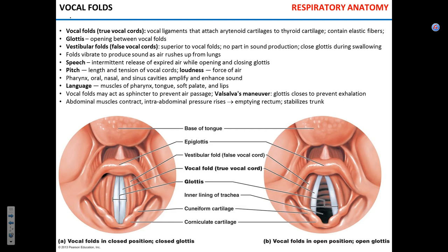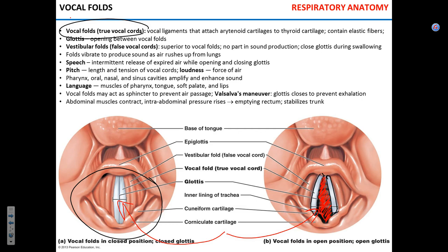The white structures in the larynx made of connective tissue — essentially ligaments — are called true vocal cords or vocal folds; they actually produce sound. The space between them is called the glottis. When the glottis is open, you can produce sound; when it is closed, you cannot. The folds next to the true vocal cords are called vestibular folds or false vocal cords, whose function is to close the glottis when you swallow so no food is accidentally aspirated into the lungs.